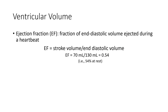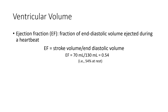Another value we can look at from those volumes is the ejection fraction. The ejection fraction is the fraction of end diastolic volume ejected during a heartbeat. If we take our stroke volume — about 70 milliliters — as a fraction of our total filling volume, our end diastolic volume of 130 milliliters, we get about 0.54, and that is called the ejection fraction — essentially how much of the blood filled into the ventricle is actually ejected.